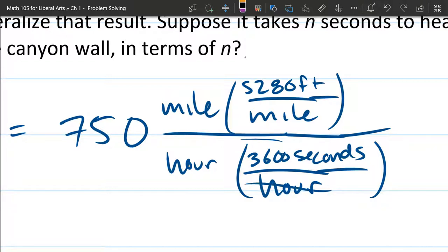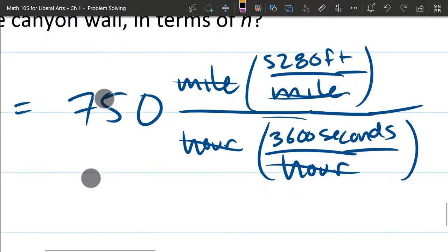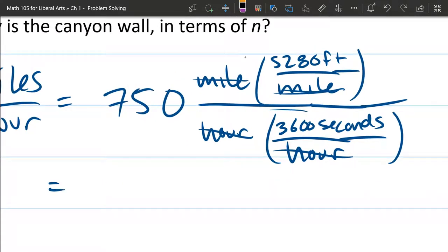So now what this lets us do is cancel the hours because we have multiply by hours divided by hours. We also do the same thing with miles. We have divide by mile and multiply by mile. So those cancel out. And now we're left with 750, we still have some fractions to deal with, 5,280 feet per 3,600 seconds.